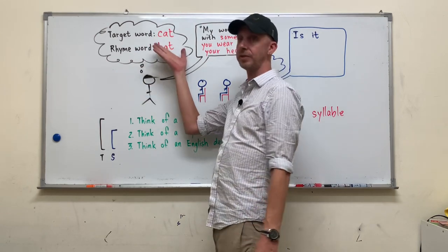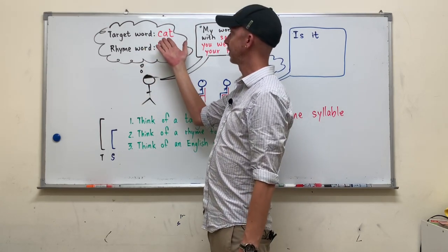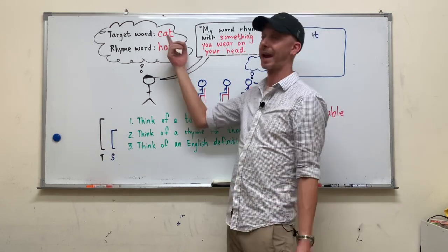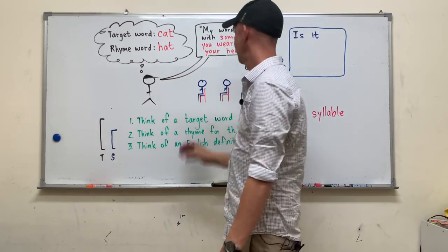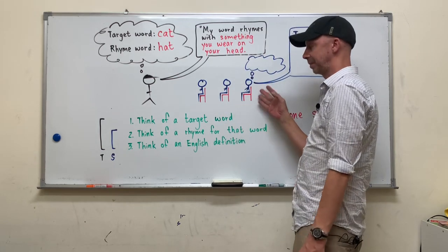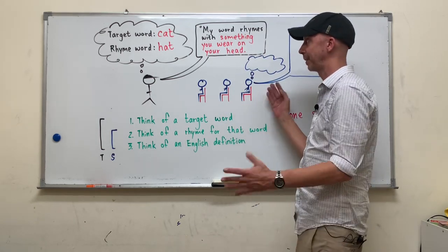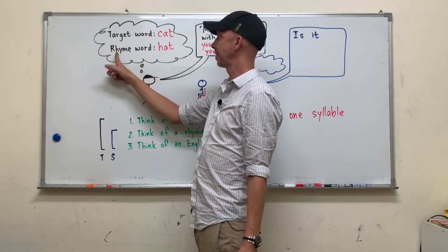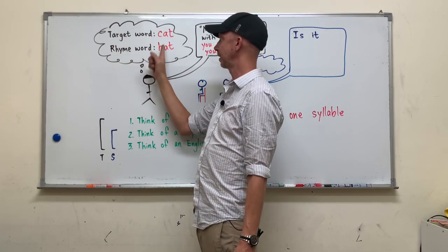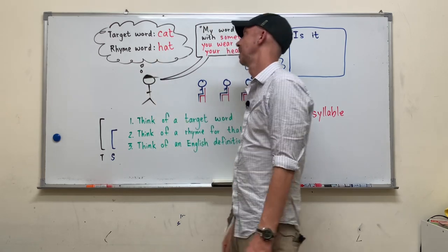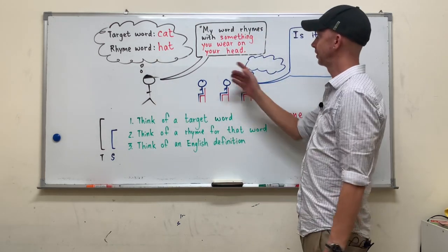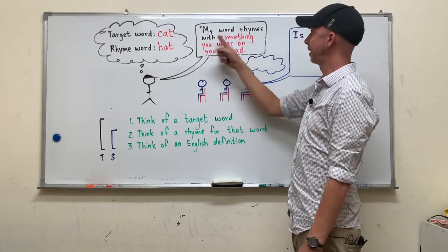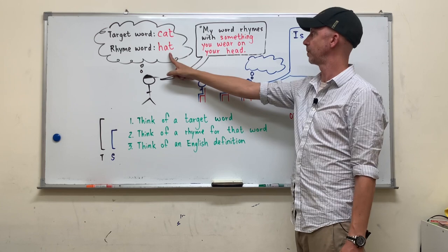So I've just used a very simple one here. My target word is cat. If anybody here gives me an English definition for cat, they win. Before I let them know anything, I need to think of a word that rhymes with cat. So I've chosen hat here. And then I'm going to tell them my English definition for the rhyming word: my word rhymes with something that you wear on your head.